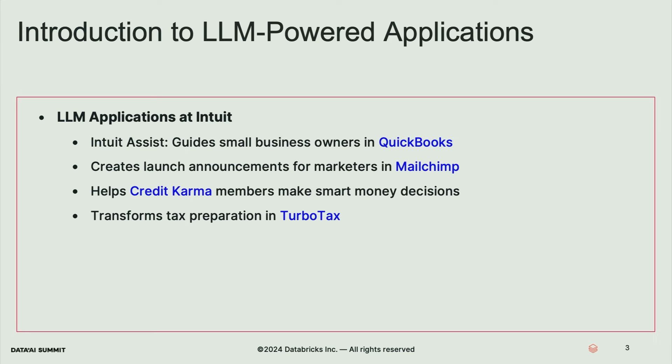By now all of us are familiar with LLM powered applications — different kinds of chat experiences, summarization tools, etc. At Intuit we have been building this kind of LLM powered applications embedded within our major products: QuickBooks, Mailchimp, TurboTax, and Credit Karma. These are helping customers do their business. For example, in QuickBooks we have a small business guide called Intuit Assist, and in Mailchimp we have launch announcements for marketers.